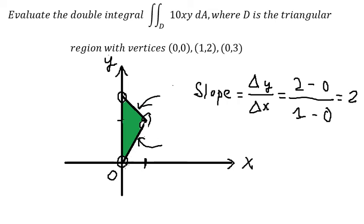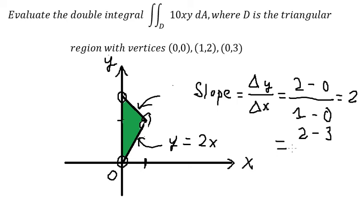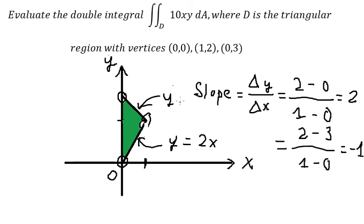Since this line passes through (0,0), that means we have y equal to 2x. Now we do the same technique for the second line. We have points (0,3) and (1,2), so we get 2 minus 3 over 1 minus 0, which gives negative 1. Since it passes through (0,3), we get y equal to negative x plus 3.